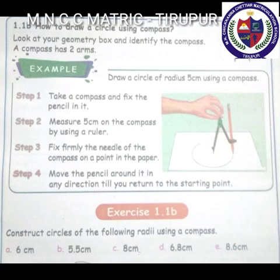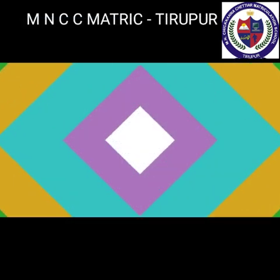Exercise 1.1b: Construct circles of the following radii using a compass. First one: 6 cm. Second one: 5.5 cm. Homework. Thank you.